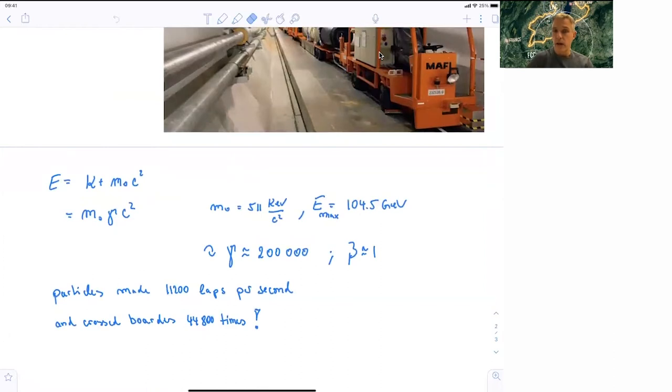So now to figure out how fast the electrons are moving, the electrons and the positrons, we can use our relativistic total energy for the electron or for the positron, which is the kinetic energy plus the rest mass of the electron or positron, which is m₀ gamma times c squared. So with a mass of 511 keV over c squared and this energy of 104.5 GeV, this results in a gamma factor of 200,000.